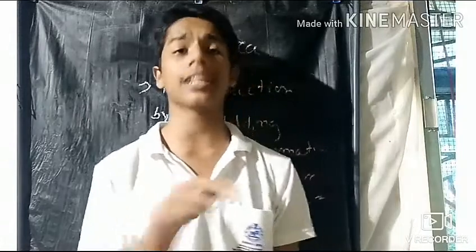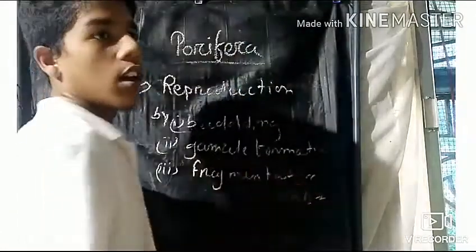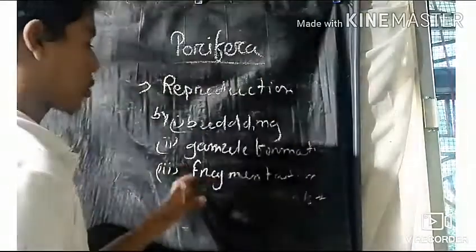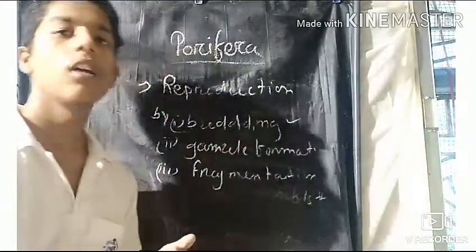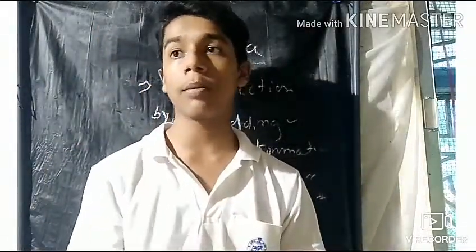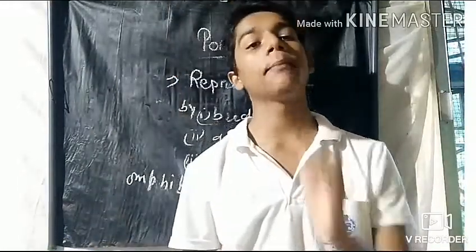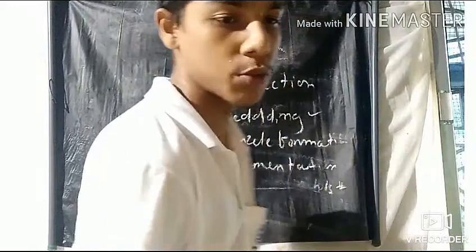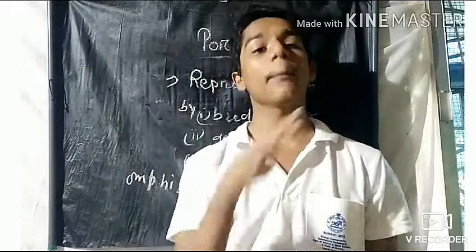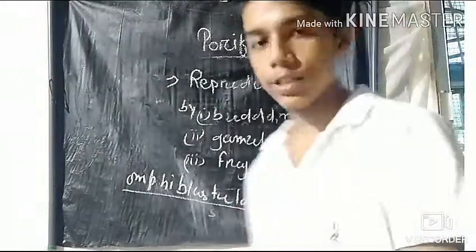Reproduction: the body reproduces by fragmentation and gemmule formation. The body is bisexual. Development is indirect, with a free-swimming larval stage called the amphiblastula larva.